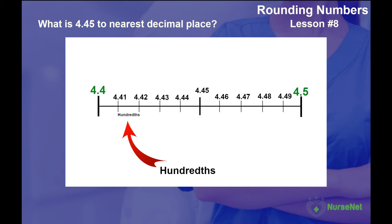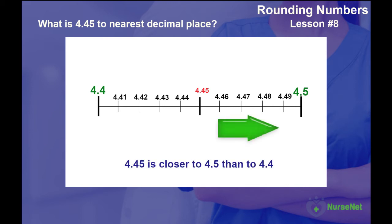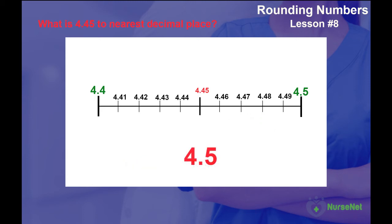Let's identify the midpoint, which coincidentally happens to be 4.45. Now, applying our rule, which is, in maths, if we have a 5 in the number, we round up, we know that 4.45 is closer to 4.5 than it is to 4.4. Therefore, to answer our question, if we wanted to round 4.45 to the nearest tenth, the answer is 4.5.